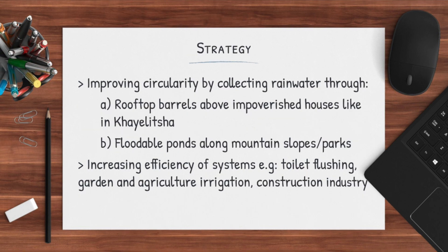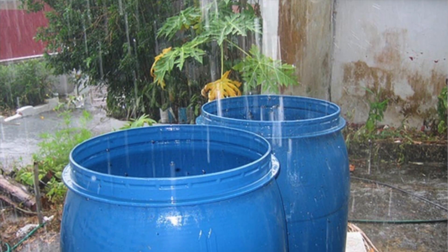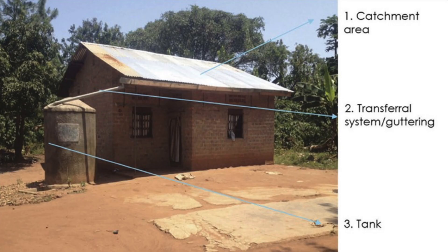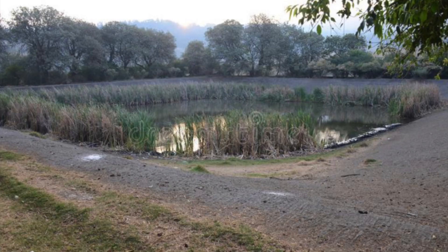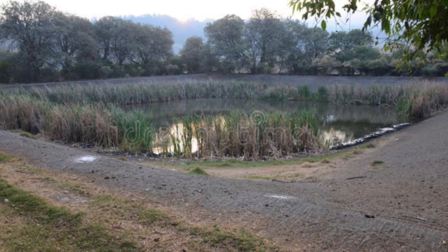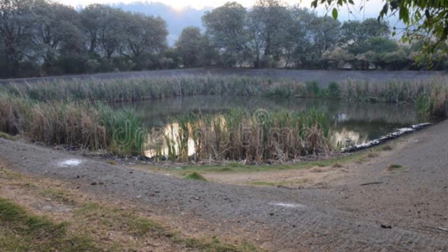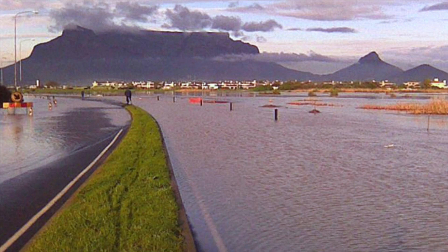More specifically, circularity can be improved by collecting rainwater either through rooftop barrels, which can be done on a smaller household scale as well as a larger neighborhood scale, as well as implementing floodable ponds along mountain slopes, which allow for natural water retention — one of the problems that needs to be addressed in Cape Town.